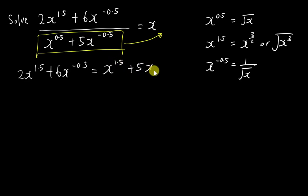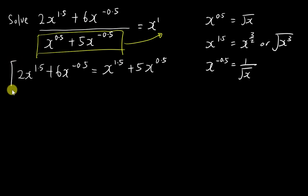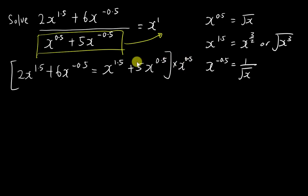Plus 5x — now you have negative 0.5, and you need to add 1 because this is x to the power 1, and multiplying means adding exponents, so you get positive 0.5. To make this equation a little easier, I'll multiply the whole equation by x^0.5. I do this because I don't want to work with powers of 1.5 or 0.5. Multiplying by x^0.5 means adding 0.5 to each power.